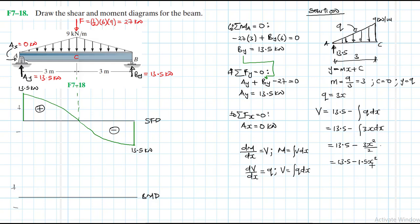This is the equation governing our shear from A to C. When x equals 0 we have 13.5, and when x equals 3 we have 13.5 minus 1.5 times 9, which gives us zero. That confirms the right equation.